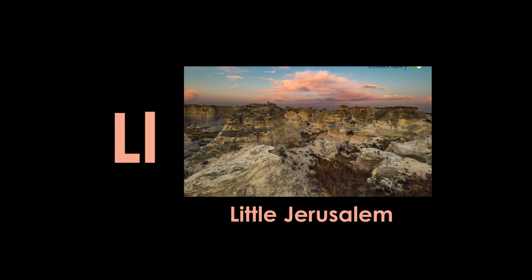L is for Little Jerusalem Badlands State Park, the newest state park in Kansas. This park contains tall rock spires and rugged cliffs created when most of Kansas was at the bottom of an ancient ocean. Just imagine — at one time there were fish and sharks and mosasaurs swimming in and out of all the rocks in this picture. This looks like what I think the bottom of the ocean looks like today.